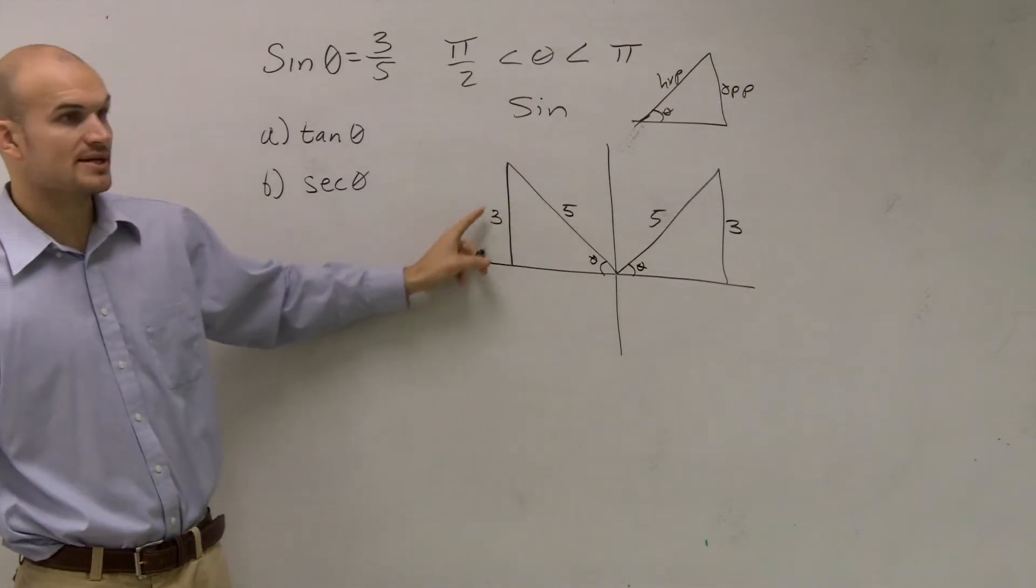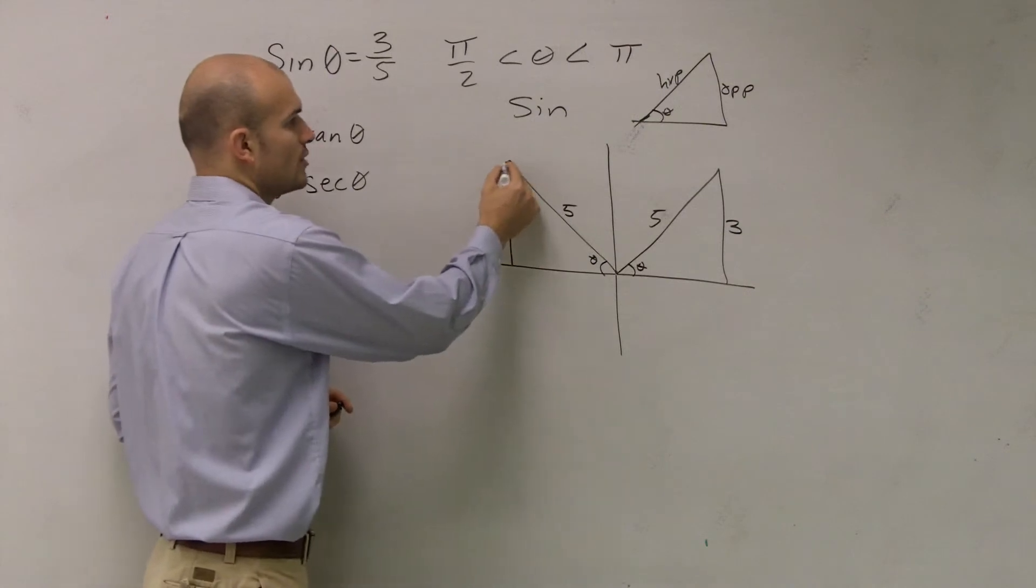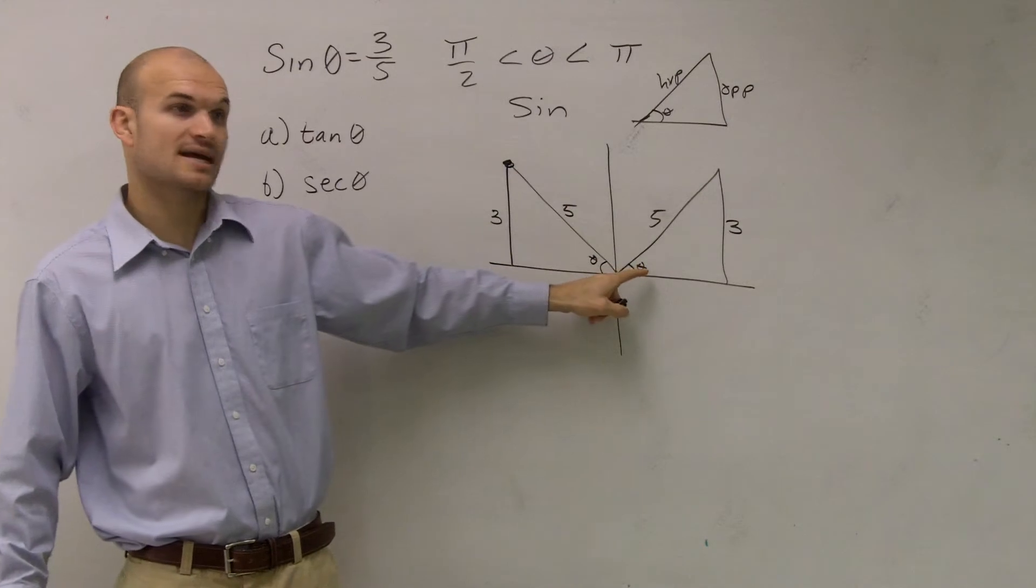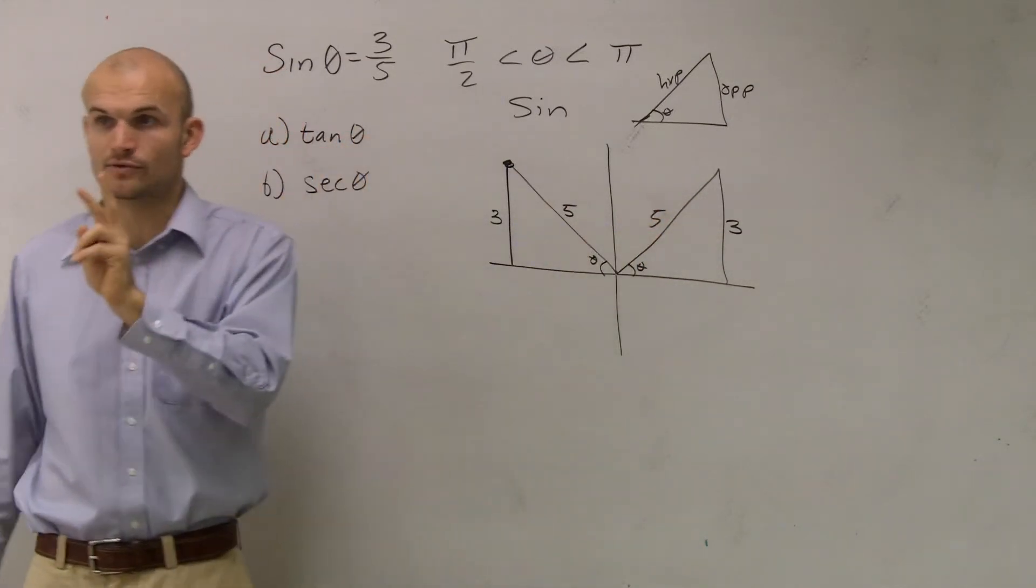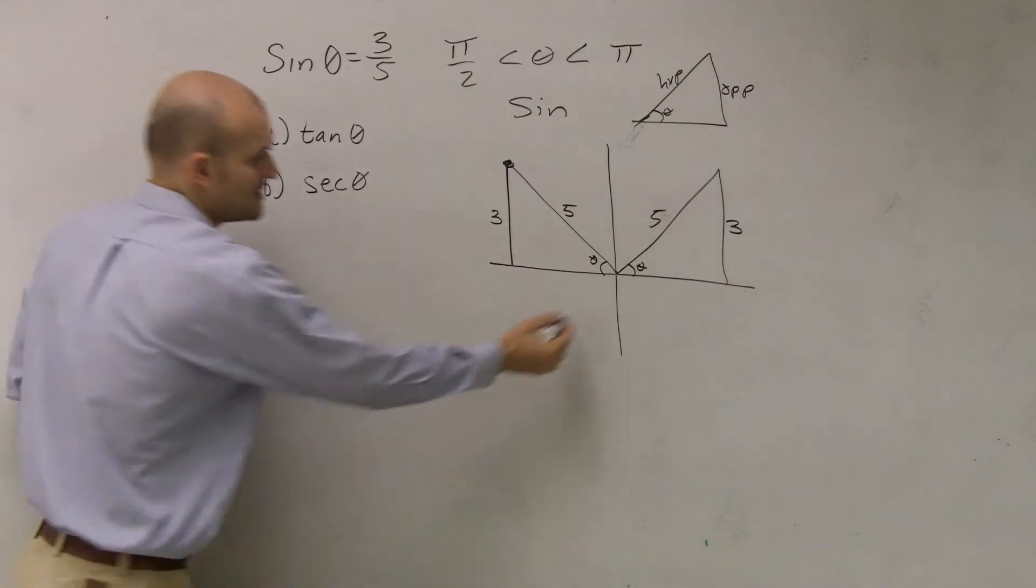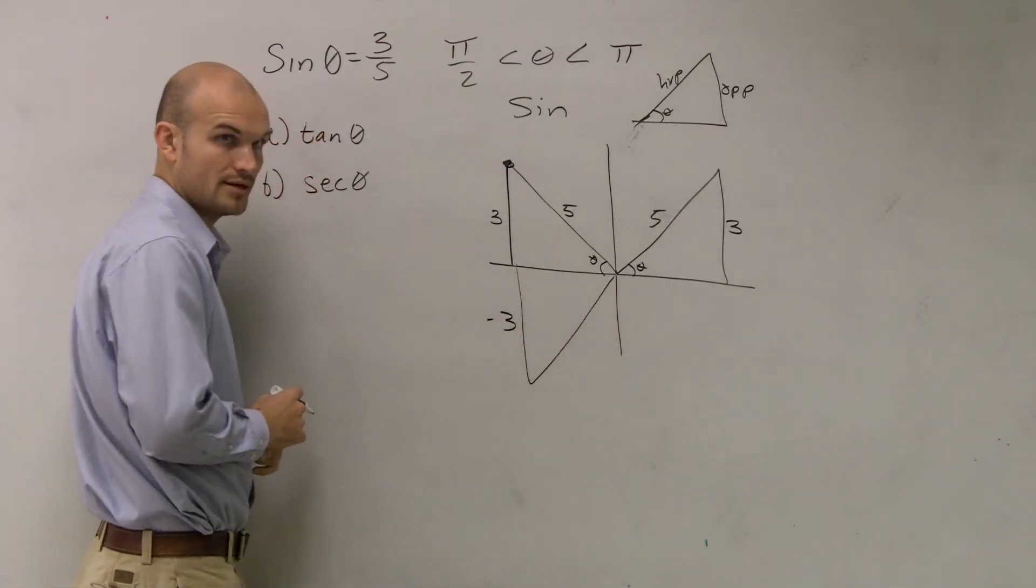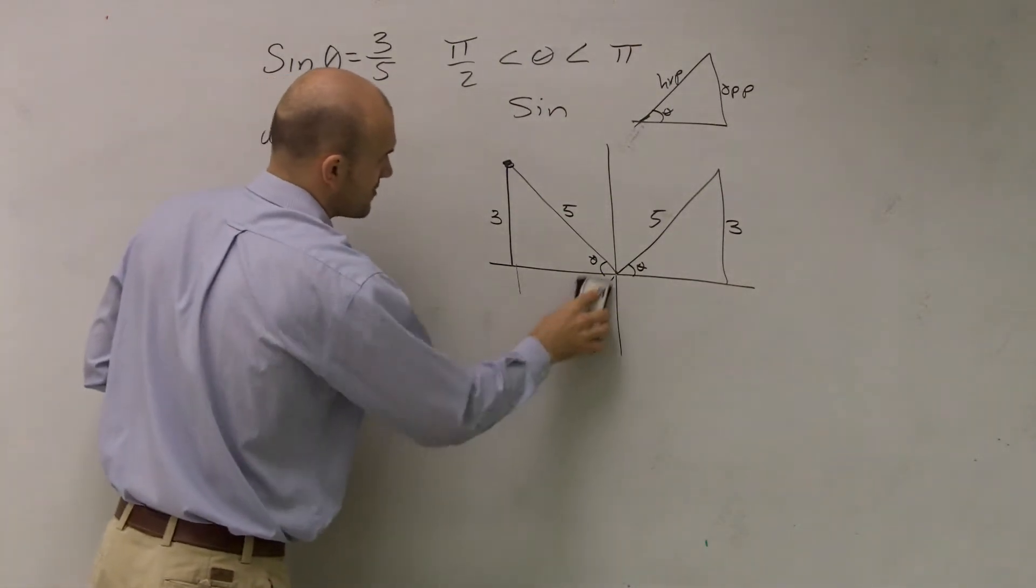What is sine? Opposite over hypotenuse, or the y over the radius, y over the hypotenuse. So the sine of this theta is 3/5. The sine of this theta is 3/5. Does everybody see how I have two triangles that make a sine 3/5? It can't be down here because then that would be a negative 3. So I have two possible triangles for my answer.